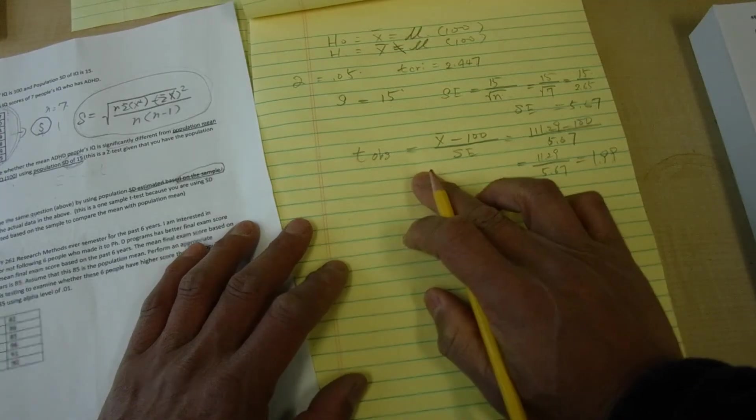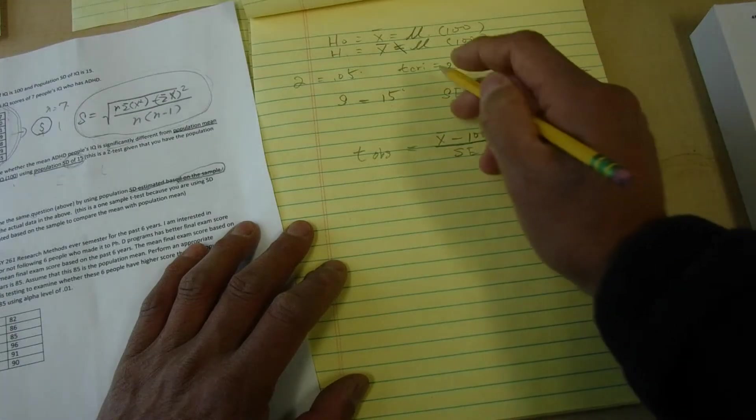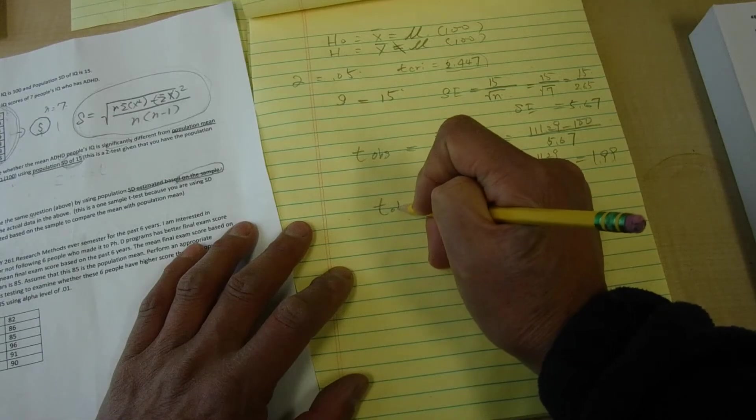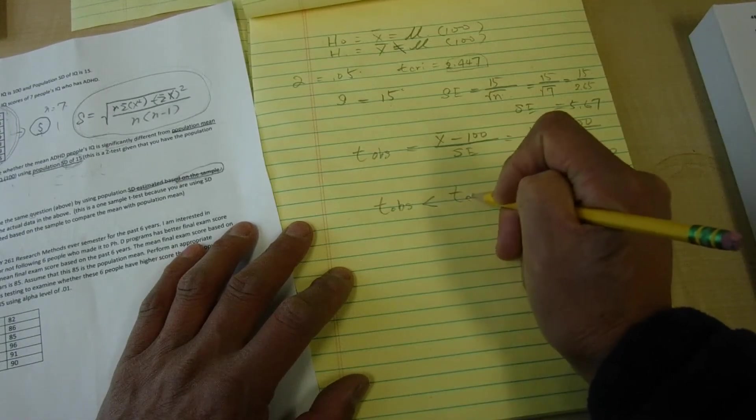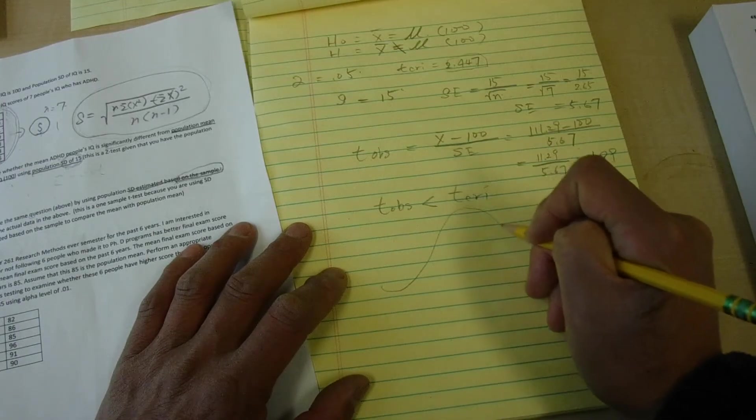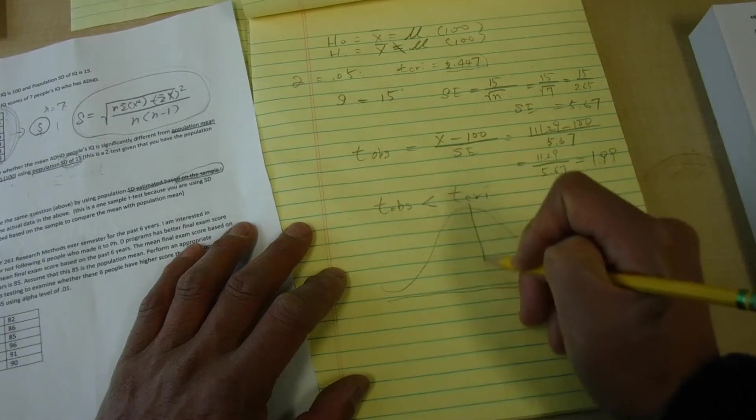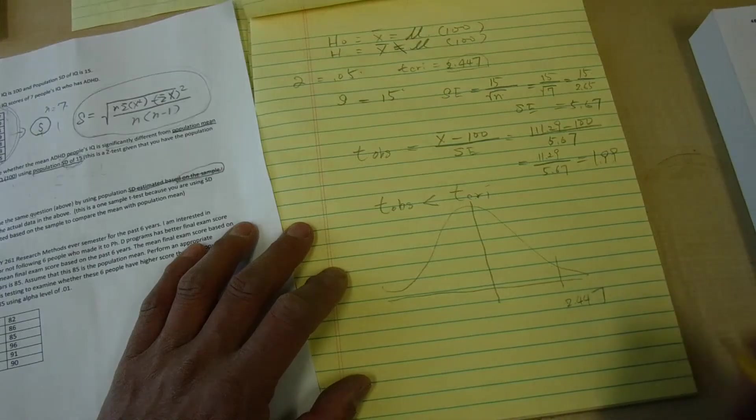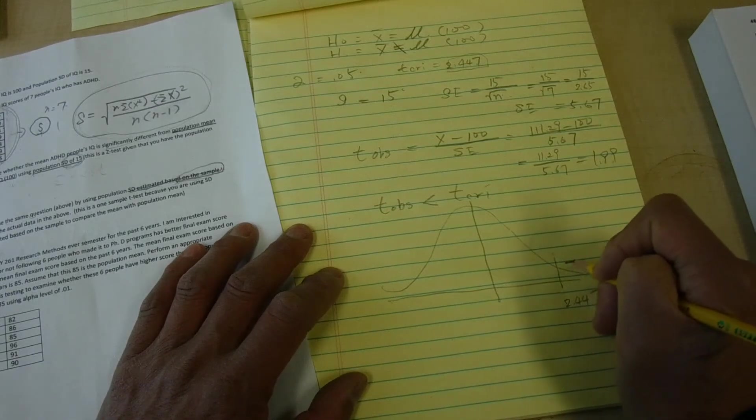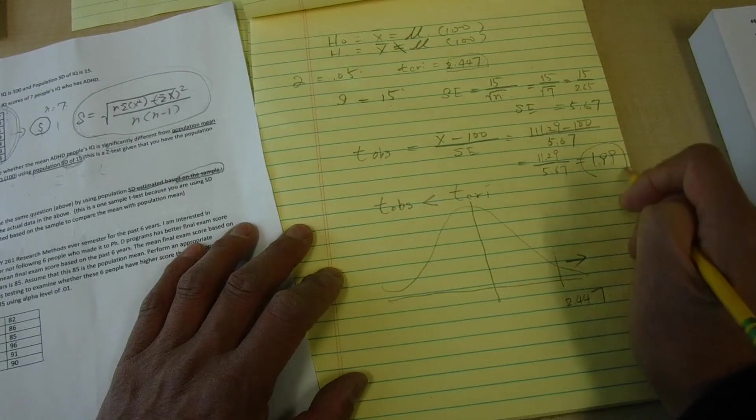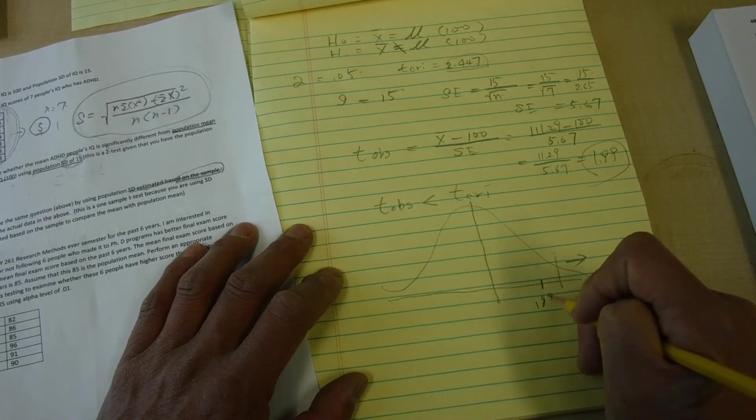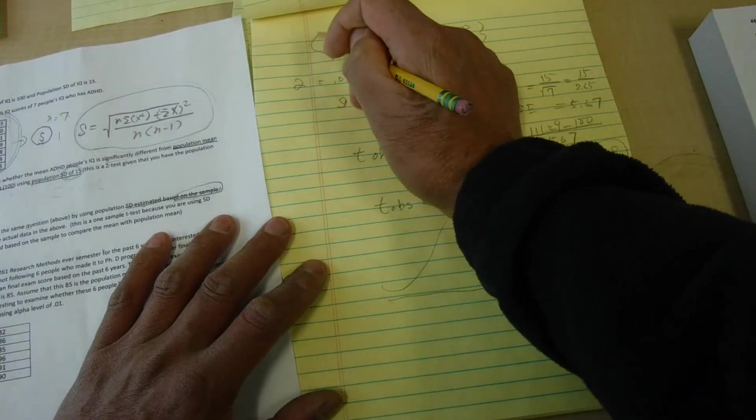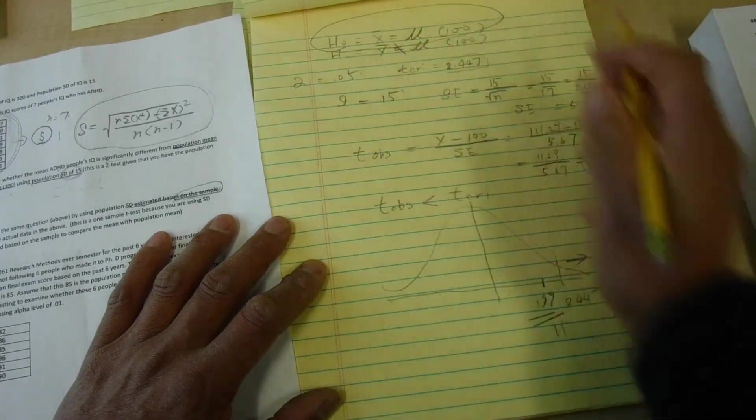So t observed is 1.99, which is actually smaller than 2.449. So t observed is smaller than t critical. So this means in terms of the things that we are doing, so this is a t critical, that's 2.447. In order for you to reject the null hypothesis, it needs to be outside, but 1.99 is located here. Therefore, you fail to reject the null hypothesis, so we are going to retain the null hypothesis. So retain.